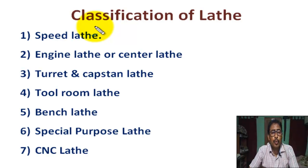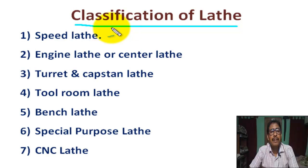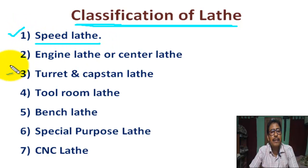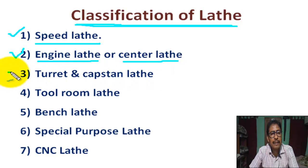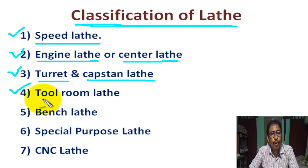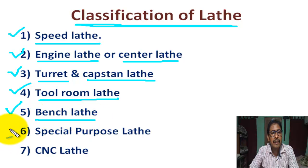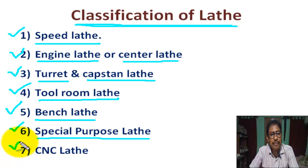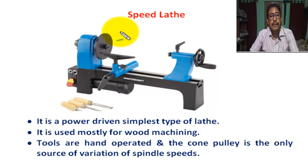Students, today we are going to learn an important topic: classification of lathe, types of lathe. Number 1: speed lathe. Number 2: engine lathe or center lathe. Number 3: turret and capstan lathe. Number 4: tool room lathe. Number 5: bench lathe. Number 6: special purpose lathe. Number 7: CNC lathe.